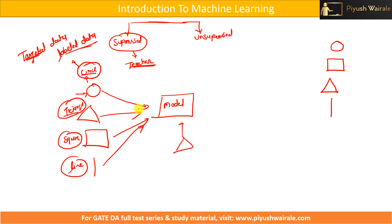We are going to feed this particular data into this particular model. And what we are expecting: if we put any random shape to this model, if I just input this shape, the output should be — it is a triangle. This is what supervised learning is. Here we have an input which is the shape, and we also have an output. This is targeted data or labeled data. We know this is a circle. We want to train our model to understand — this is a circle, this is a triangle. In supervised learning, the input and output variables are both known.